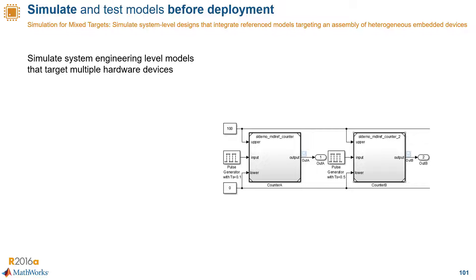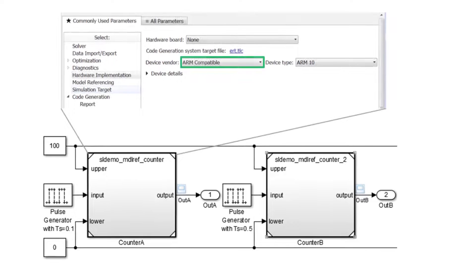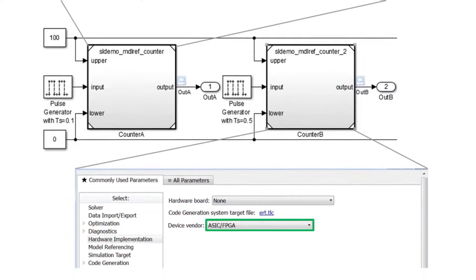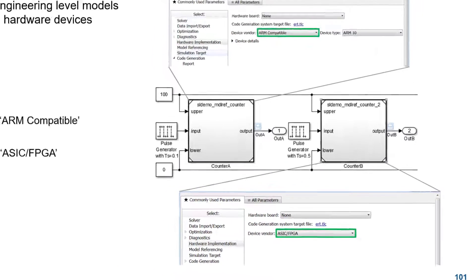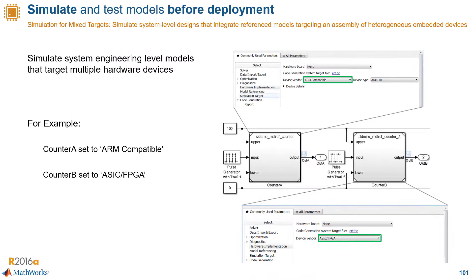For example, in this parent model here, one model reference is configured to be ARM compatible, and the other model reference is set to ASIC FPGA. The goal is to help you simulate and test your system level designs before deploying to hardware.